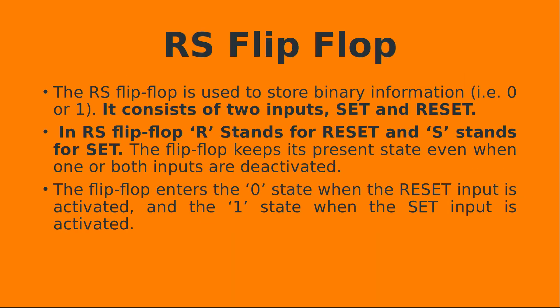Now I am going to take the R-S flip-flop. What is the meaning of R-S flip-flop? R-S means reset-set state. If R is equal to 1 and S is equal to 0, then it is called a reset state. If R is equal to 0 and S is equal to 1, then it is called a set state. That means R equal to 1 means reset state, and S equal to 1 means set state.